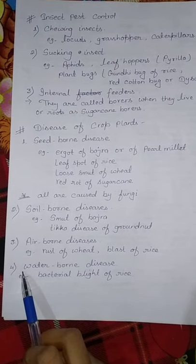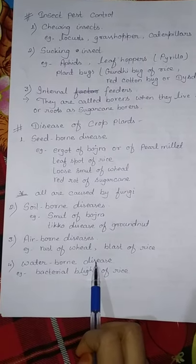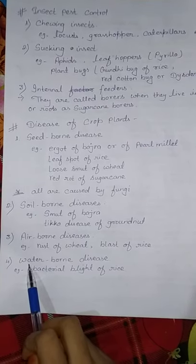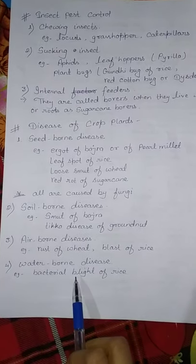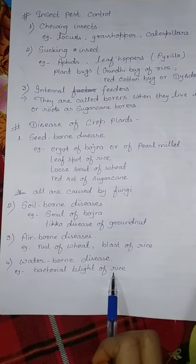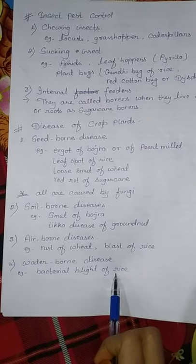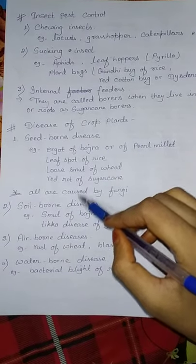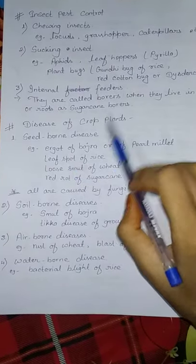Fourth is water borne disease, which spreads through water or occurs in water. Example is bacterial blight of rice. You have to remember all these names of insects and diseases.